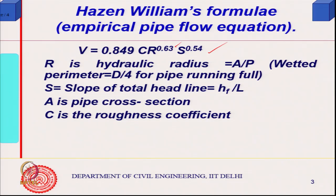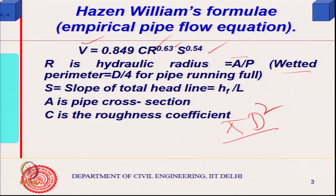In the Hazen-Williams equation, V is the flow velocity and R is what is called hydraulic radius — area divided by wetted perimeter. In the case of a pipe running full under pressure, the area is πd²/4 and the wetted perimeter is πd, so the hydraulic radius is simply d/4 for a pipe running full.